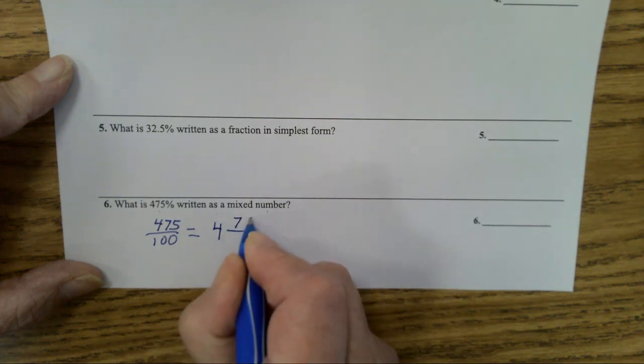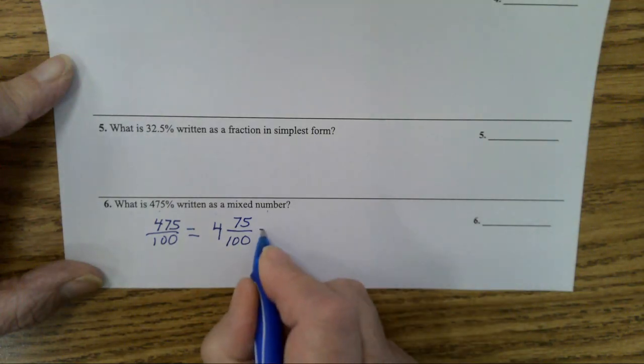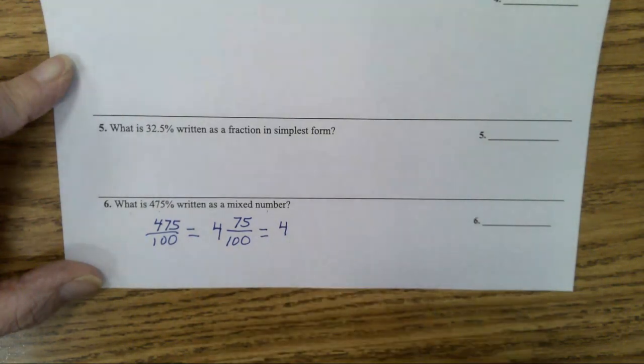Now we already know - we did this earlier today - what will 75/100 simplify to? Yes, 3/4. So the mixed number is 4 and 3/4.